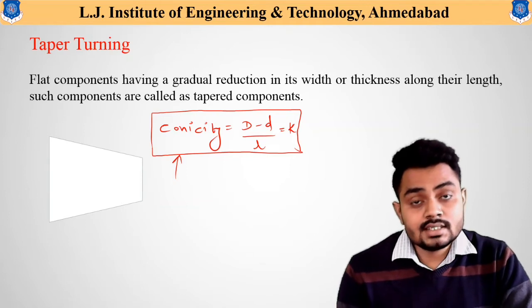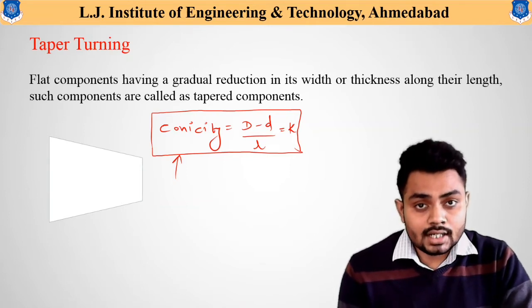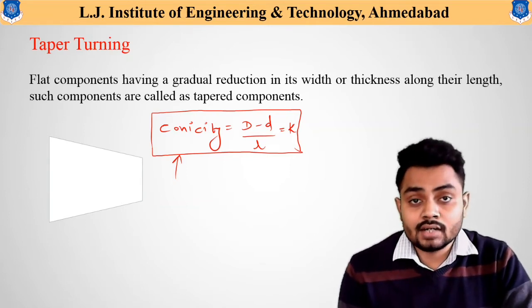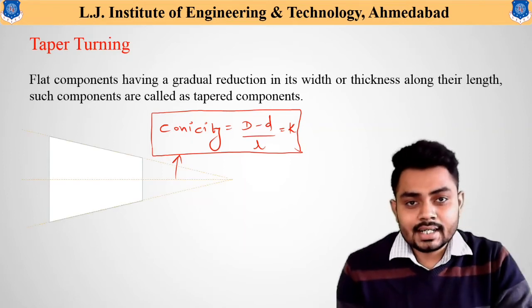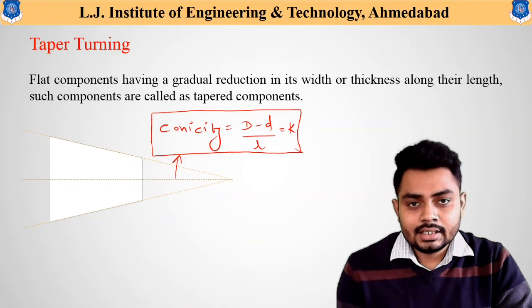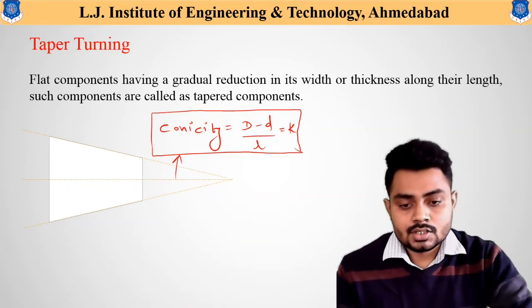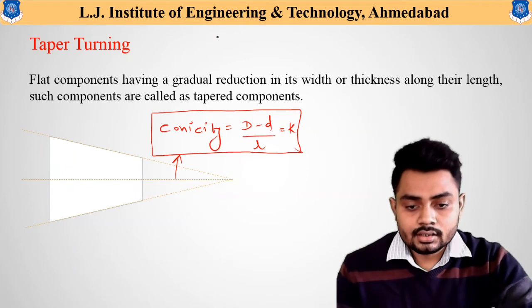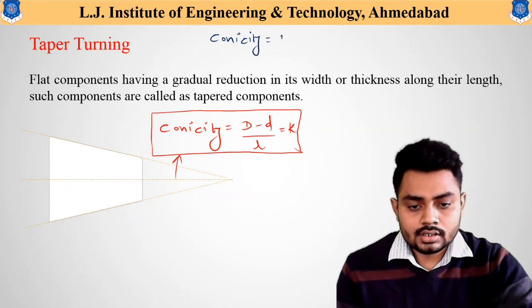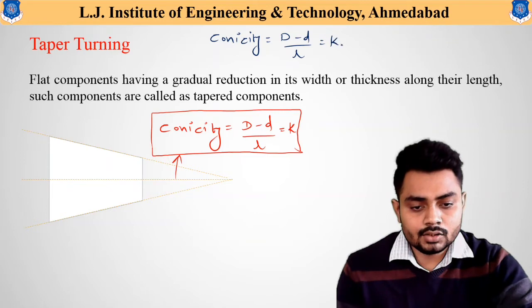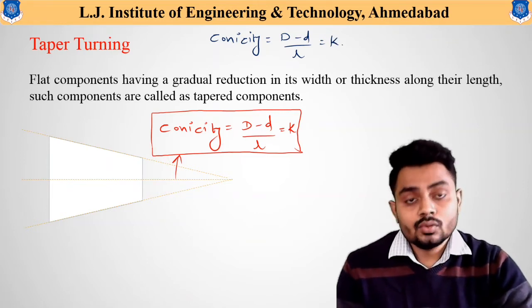I hope you got the clarity about what is the tapered component and what are the important notations required to understand further topics. Let us write the conicity equation: conicity equals capital D minus small d divided by L, equal to K. We will now continue our derivation using another equation.